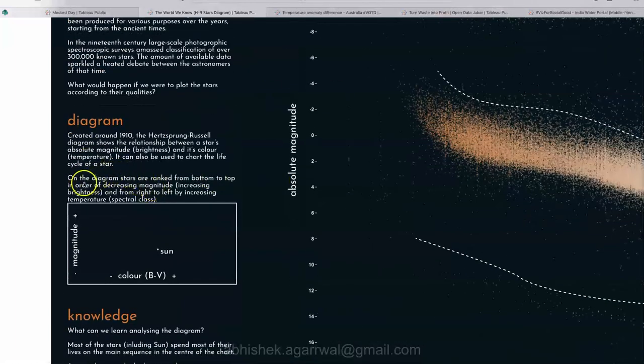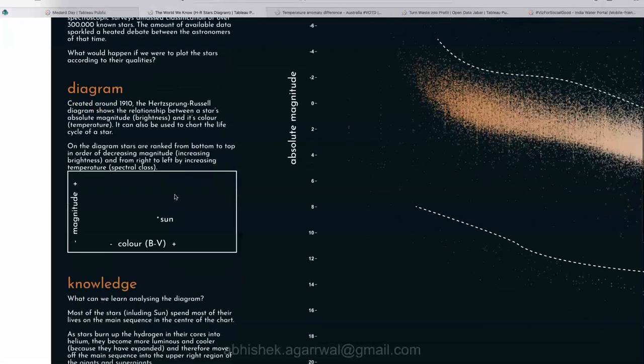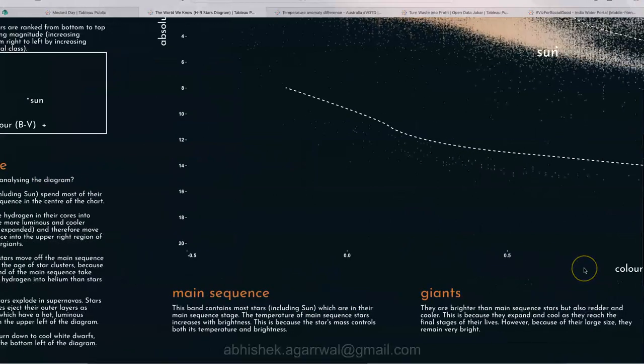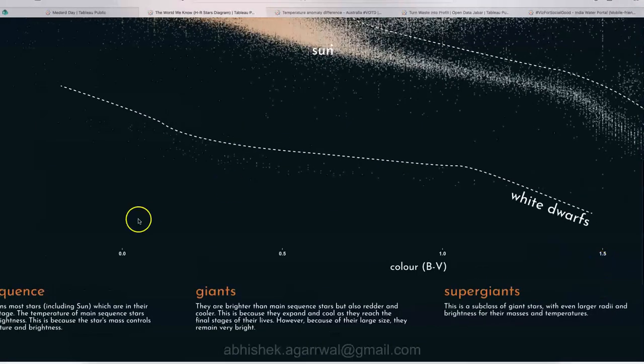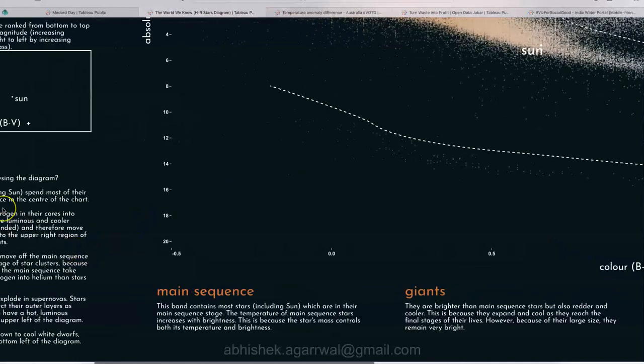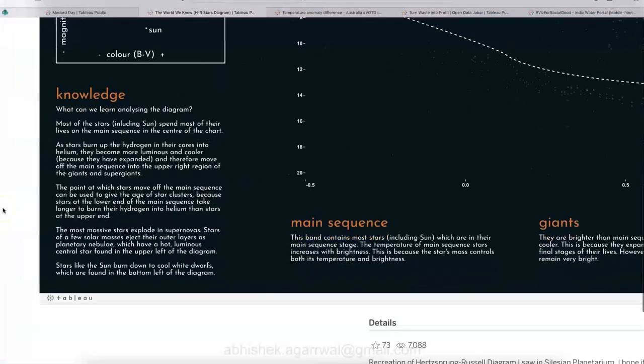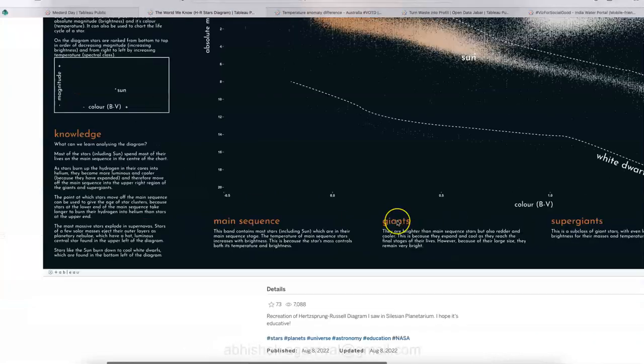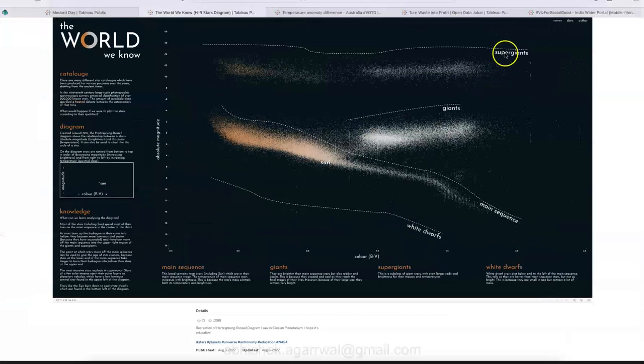So it can be used in a chart of a life cycle of a star. On the diagram, stars are ranked from bottom to top in order of decreasing magnitude, that means increasing the brightness. And from right to left by increasing temperature.